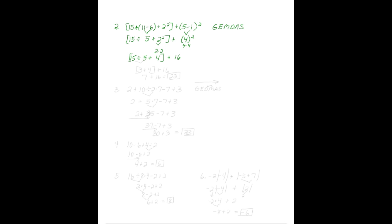Finishing up our grouping, we have 15 divided by 9. Division comes before addition. So we have 3 plus 4 in brackets, plus 16. Finishing this off, we have 7 plus 16 equals 23.